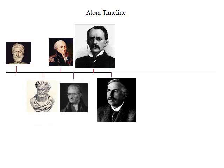The next two guys on the timeline are Thomson and Rutherford. In 1897, Thomson did an experiment where he sent electric current through a cathode ray tube that was filled with gas. The gas was giving off a negative charge, which meant that there had to be negative particles in the atom.